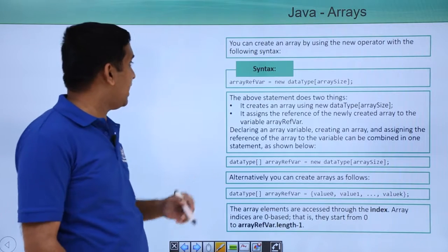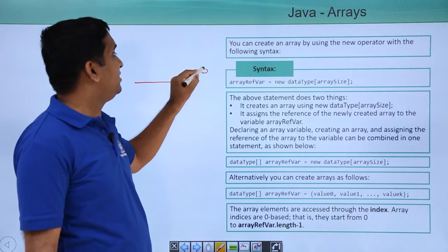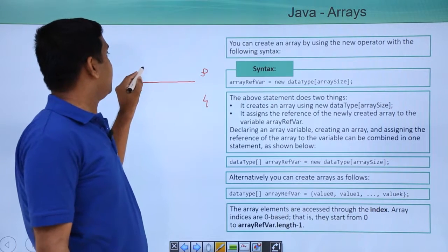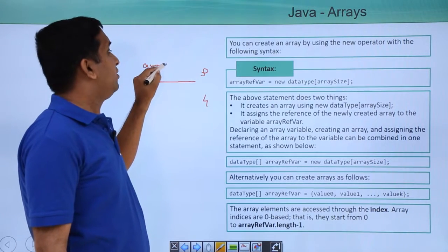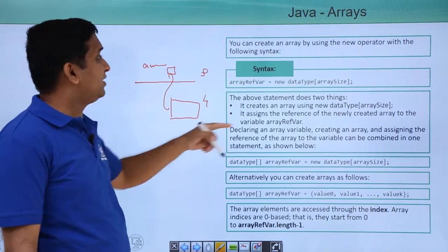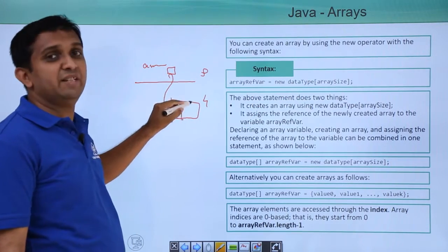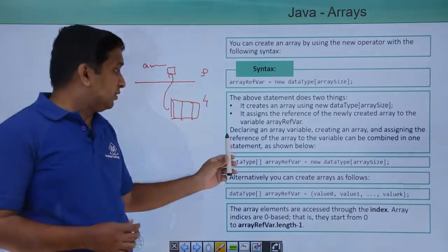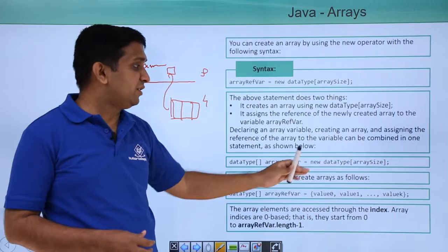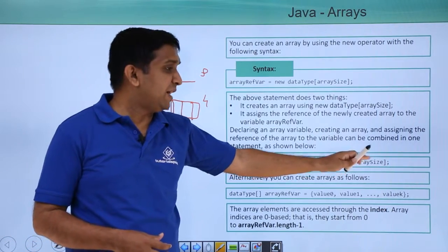The reference will lie on the stack. So if this is the stack and this is the heap, then arrayRefVar, this variable, will be on the stack, and the actual array of elements will be on the heap. The size is specified inside the subscripts. Here you will write data type first, then subscript, then name of the reference, new, again data type, and size of the array.